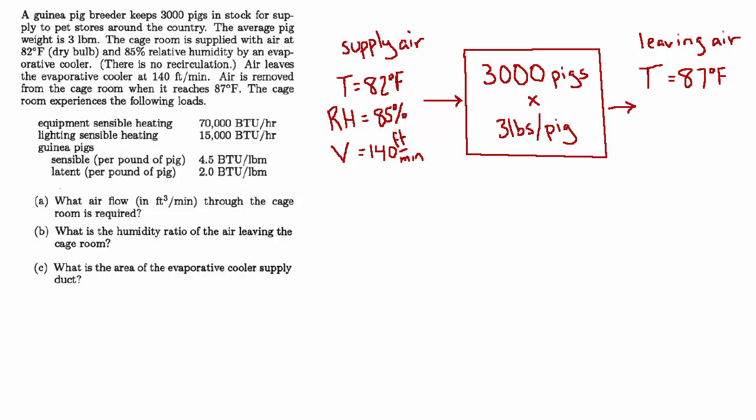Air leaves the evaporative cooler at 140 feet per minute. Air is removed from the cage room when it reaches 87 degrees. The cage room experiences the following loads.